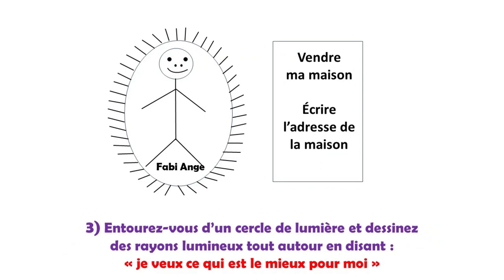Troisième étape. Je dessine un cercle de lumière autour de moi. Le cercle doit être bien fermé, et pour ne pas que mon subconscient enregistre que je suis enfermé dans quelque chose, je dessine des rayons lumineux tout autour, pour que mon subconscient enregistre que je suis dans un cercle de lumière et non pas enfermé dans quelque chose. C'est important, donc prenez le temps de faire les rayons. En même temps, je dis : « Je veux ce qui est le mieux pour moi, Fabie Ange, conscient et inconscient. » C'est quoi ce qui est le mieux pour moi ? Eh bien, je ne le sais pas, mais je veux ce qui est le mieux pour moi. Je veux ce qui est le juste prix pour ma maison.